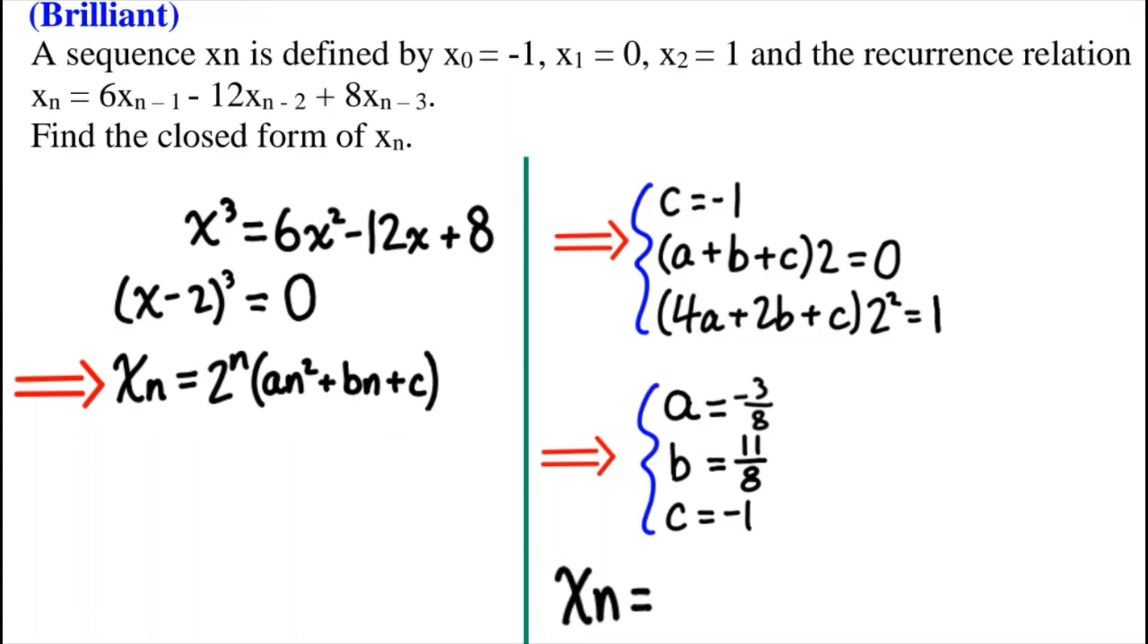Now, again, let's do the same thing that we did in our last video. So by putting n equals 0, we get that c equals negative 1. When n equals 1, we get that a plus b times 2 equals 0. And when n equals 2, we get that 4a plus 2b plus c times 2 to the second power equals 1.